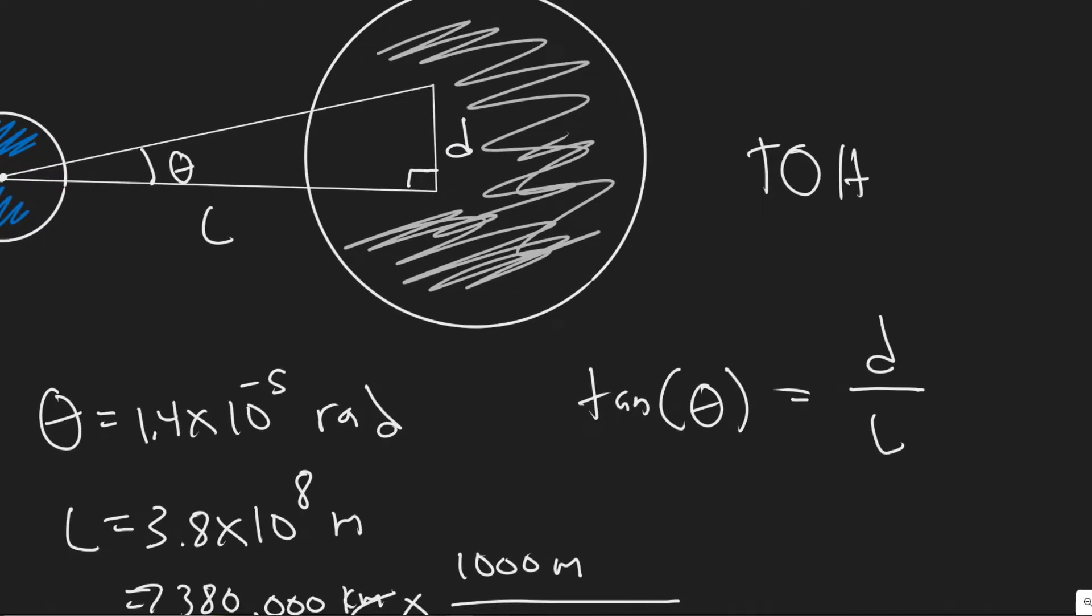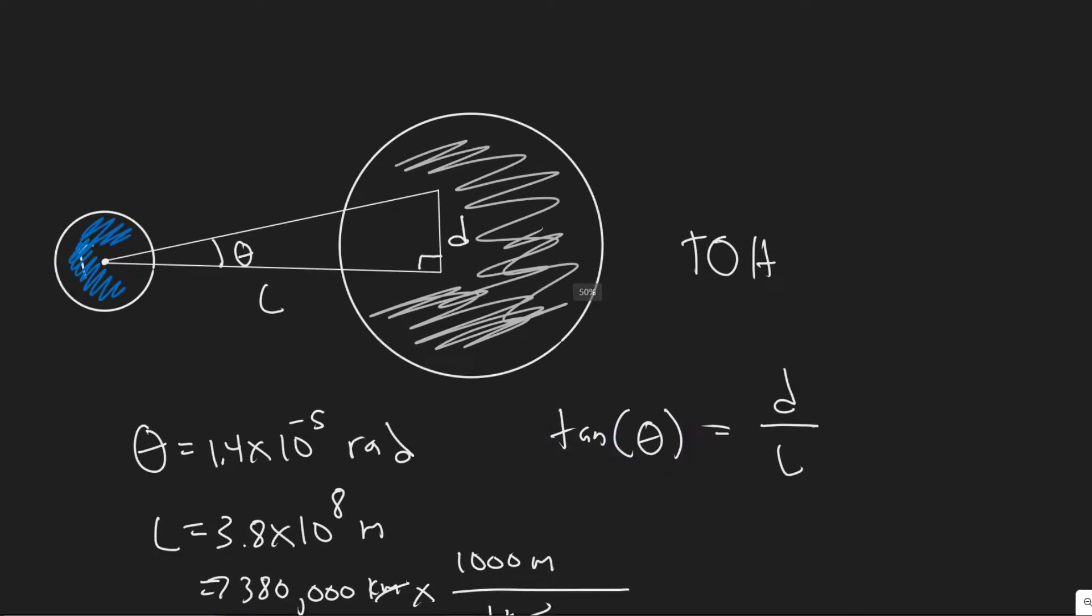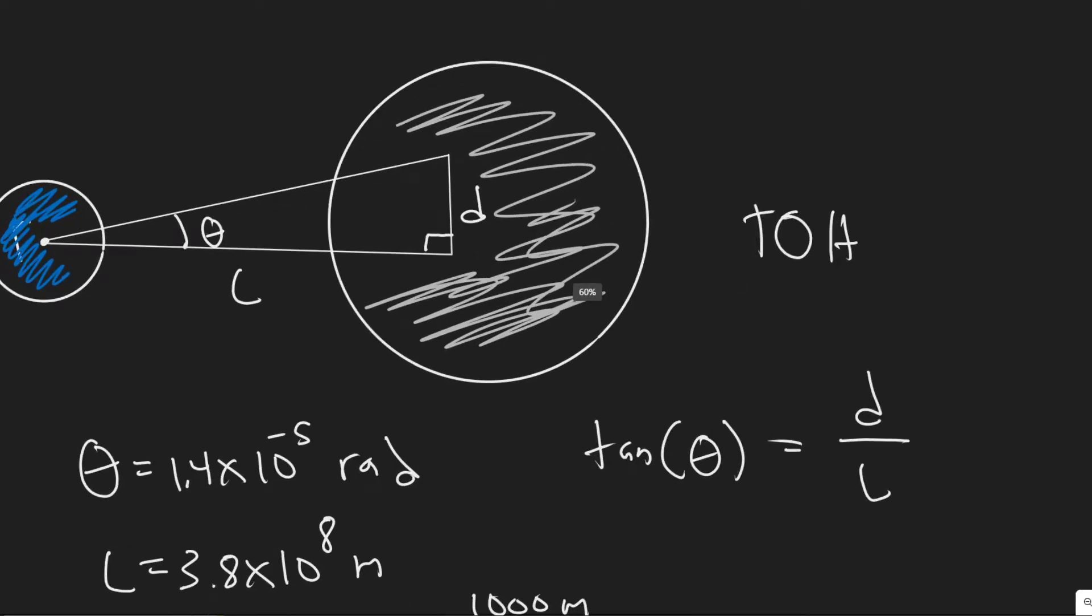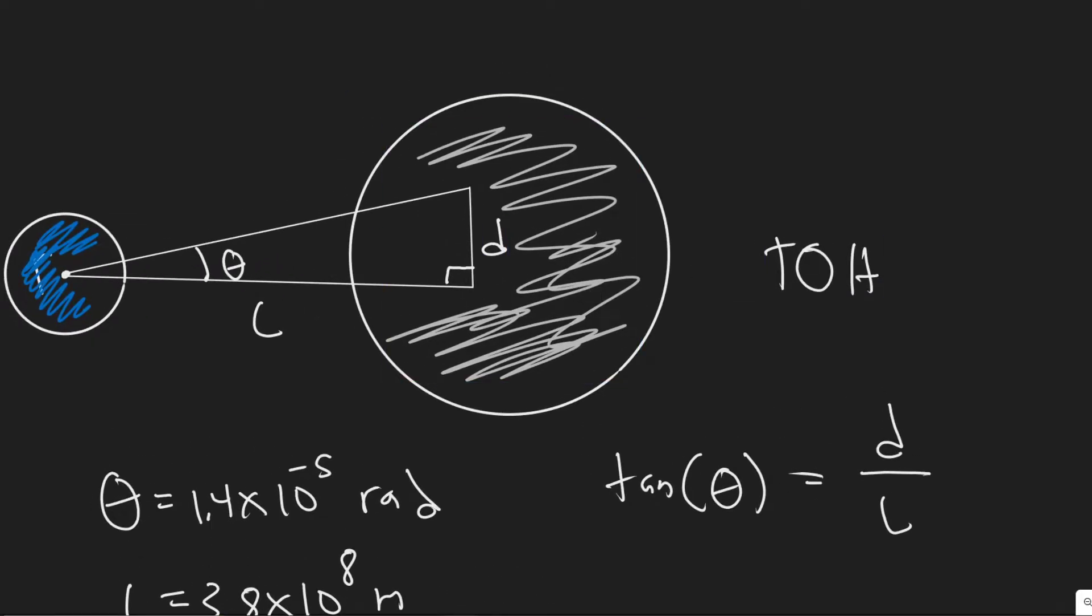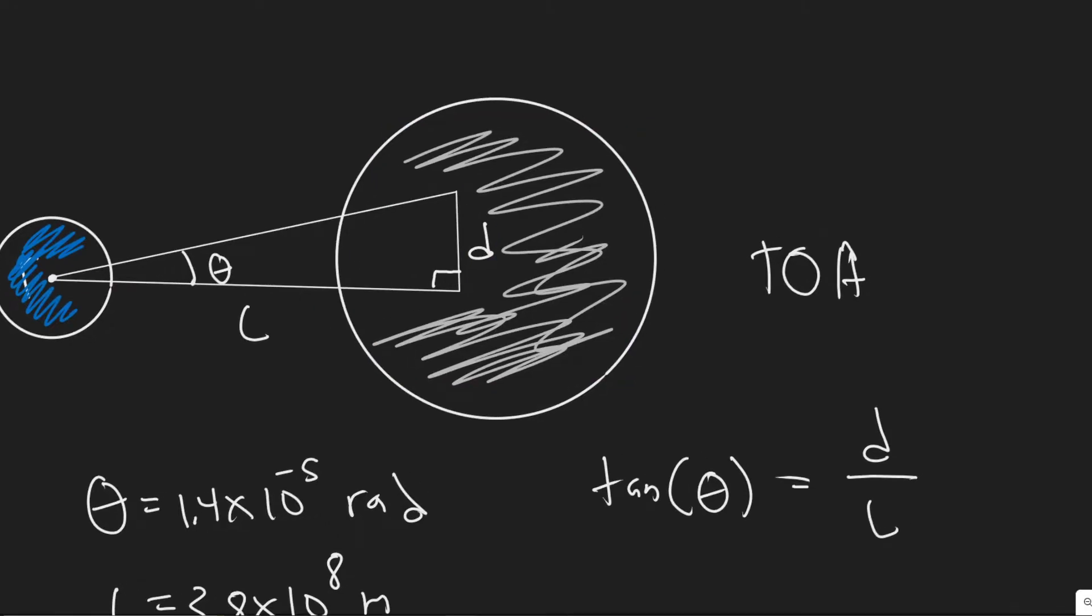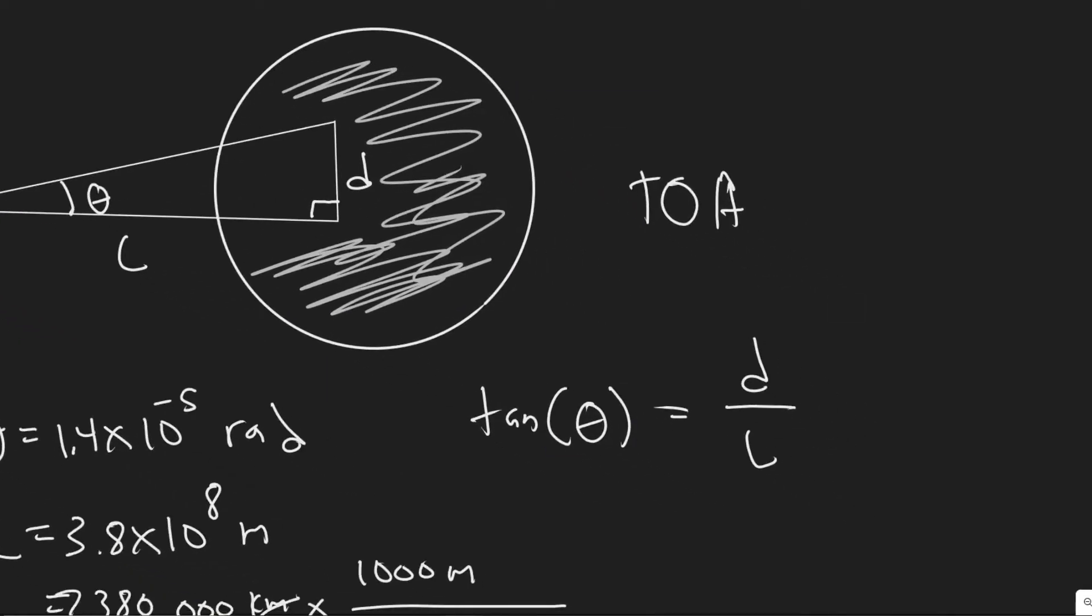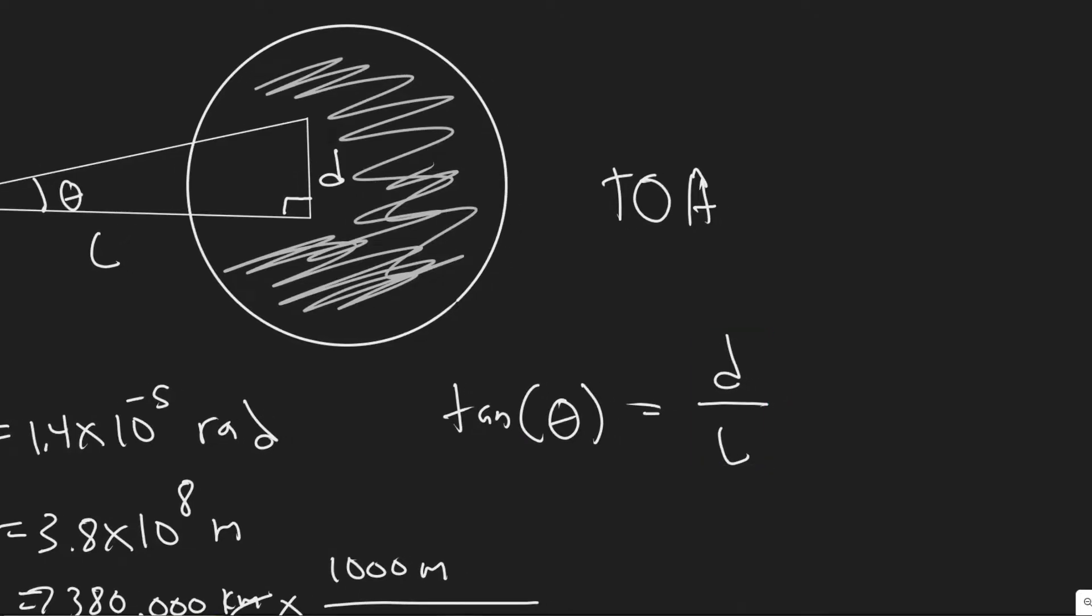And the way we do it is by using trig. So I know the tangent of an angle is equal to - tangent is opposite over adjacent. So the opposite side is D, and the adjacent side is L. Opposite to the angle is this, and the adjacent side is right here. And so we know the tangent of theta equals D over L.